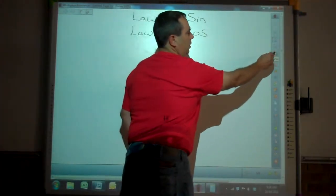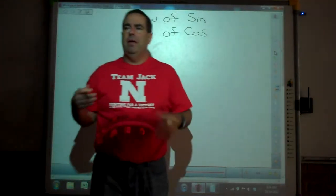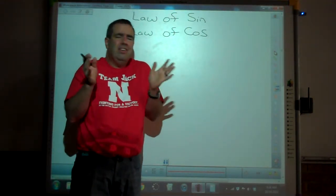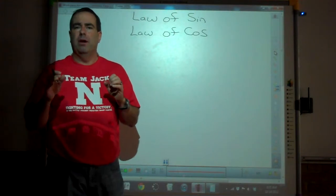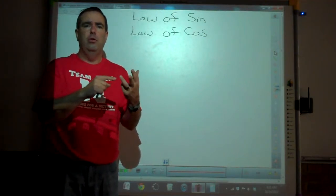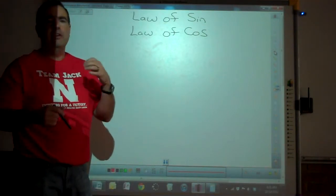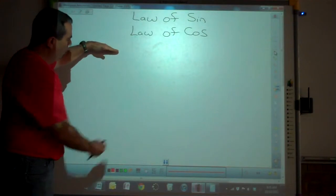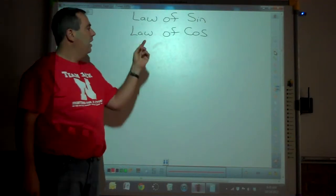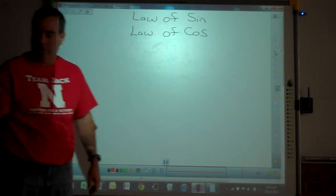I'm going to put up the steps for law of sines and law of cosines. One thing I recommend: give yourself a rough draft sketch of what it's going to look like. The reason is it'll let you know roughly if you're in quadrant one, two, three, or four. If your rough draft shows you're in quadrant three, you need values between 180 and 270 degrees, because the calculator only tells you quadrant one and quadrant four. You'll have to add or subtract 180 to get into quadrant two or three.